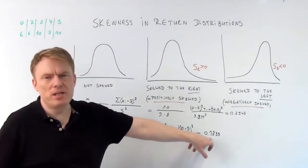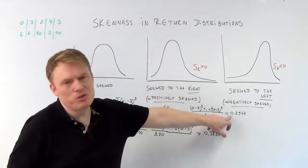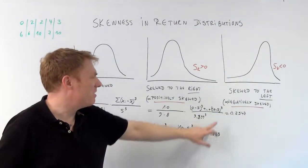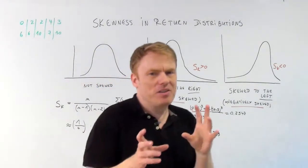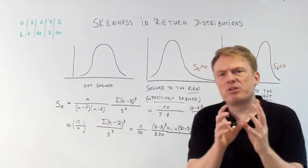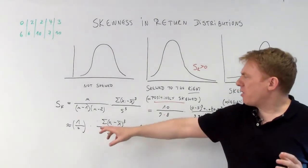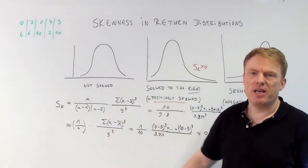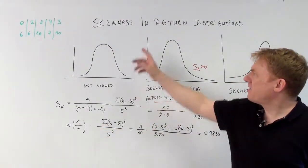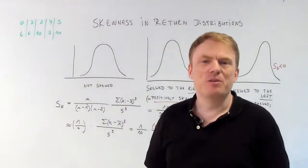0.1833 is about 0.2547. It is not that exact, but the approximation becomes better the larger our sample size n. That's it about skewness. Thank you for watching.